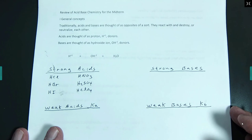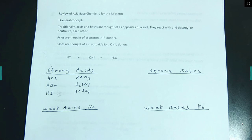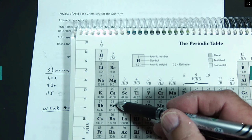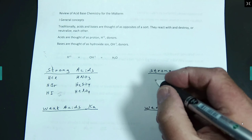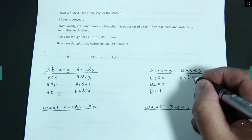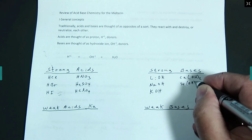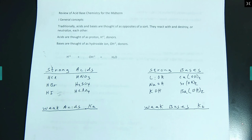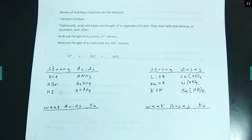Strong bases are the salts of the hydroxide, taken from the first two columns of the periodic table. So lithium hydroxide, sodium hydroxide, potassium hydroxide, calcium hydroxide, strontium hydroxide, and barium hydroxide are your strong bases that you better know. They are good, strong bases — they will dissolve your skin very quickly, tear your skin apart, and turn it into soap. That's actually how soap is made: a strong base plus animal fat gives you soap.